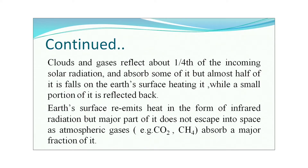Earth, clouds, and gases reflect about one-fourth of the incoming solar radiation and absorb some of it, but almost half of it falls on the Earth's surface, heating it, while a small portion is reflected back. The Earth's surface re-emits heat in the form of infrared radiation, but a major part of it does not escape into space, as atmospheric gases such as carbon dioxide and methane absorb a major fraction of it.